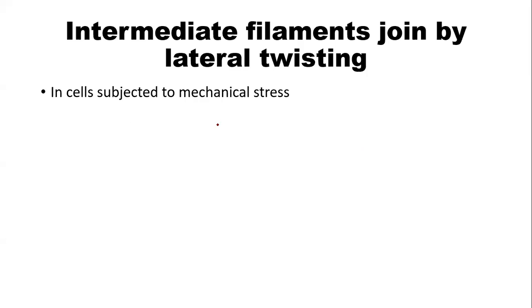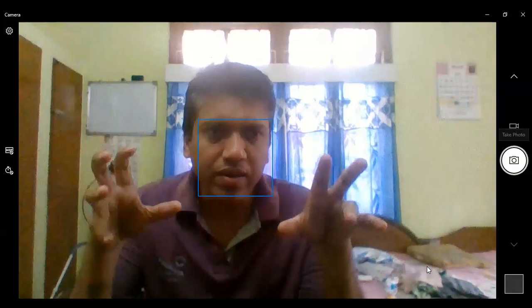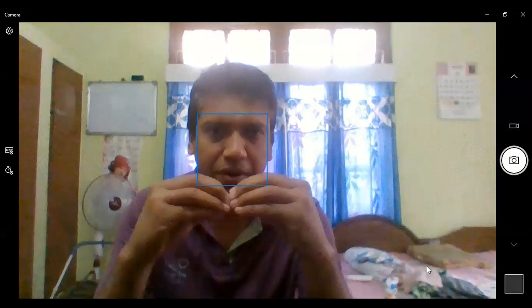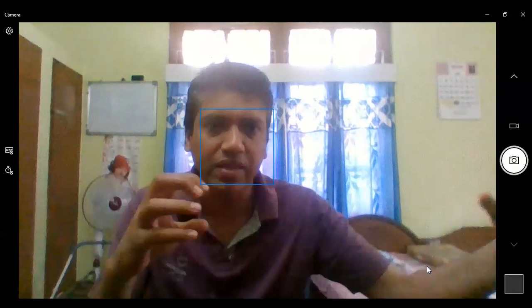Intermediate filaments join by lateral twisting. What we have seen is that actin filaments or tubulins — how they join? In case of actin filaments or the microtubules, the subunits just bind end-to-end: one will bind, then the second will come, then third will come like this. So they bind end-to-end.